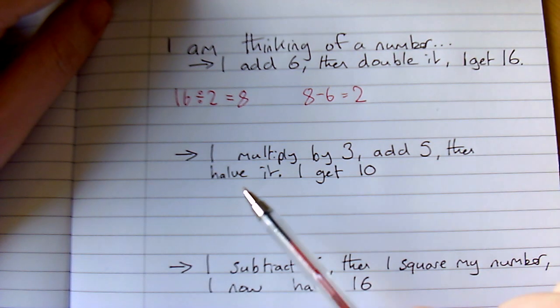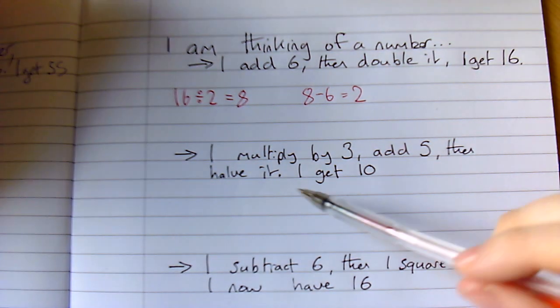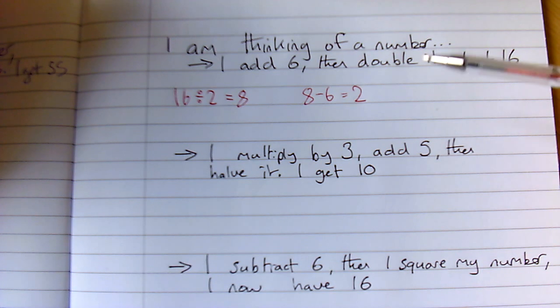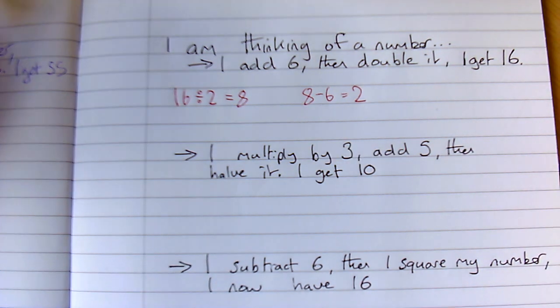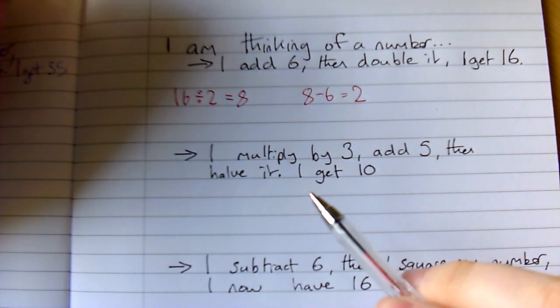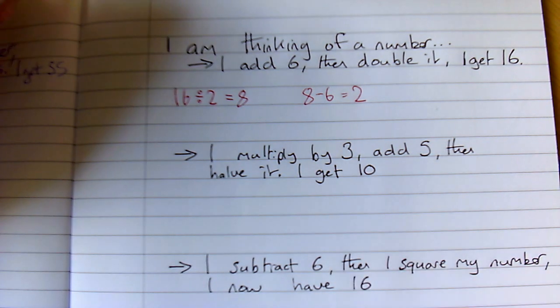Now next question. So again I'm thinking of a number. I multiply it by 3, I add 5, then I halve it. I get 10. Well my last step was halving it.